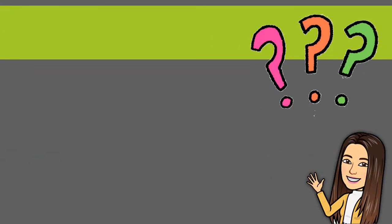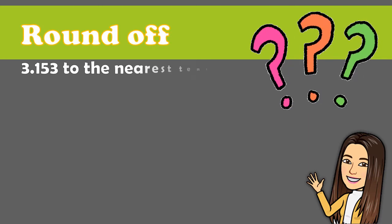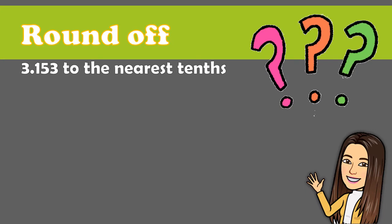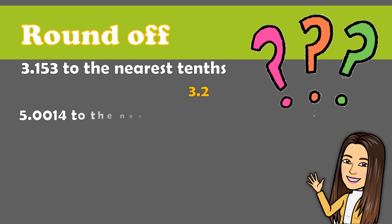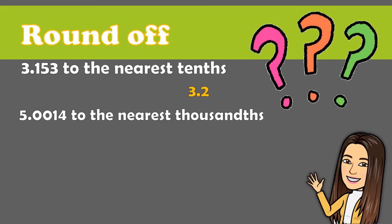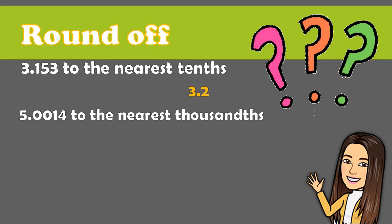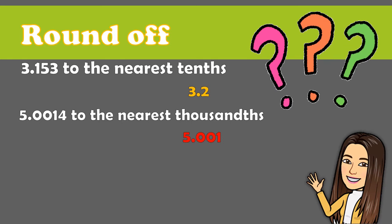Let me know how much we have learned from this lesson. Round off. Round off 3.153 to the nearest tenths. Your answer is 3.2. That's right. Next, 5.0014 to the nearest thousandths. Your answer is 5.001. Very good.